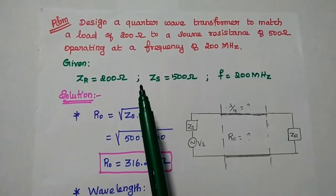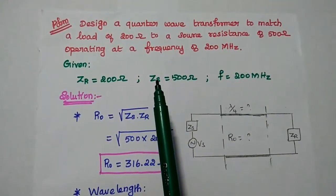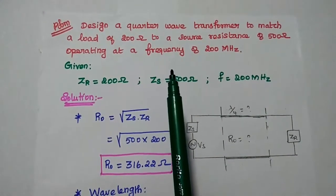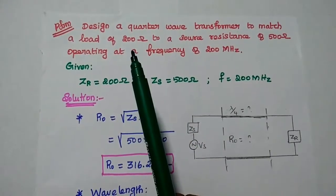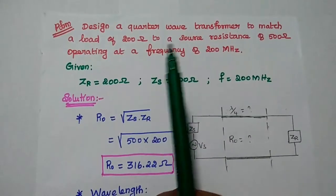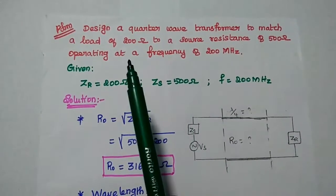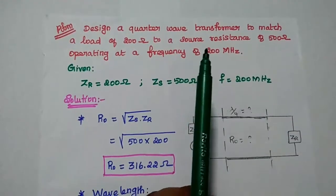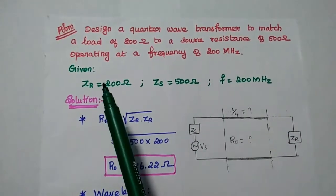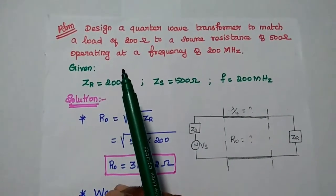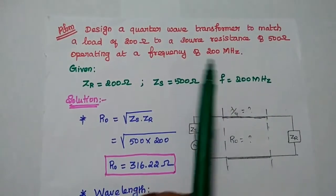Dear students, now we are going to solve important problems in quarter wave transformer. The first problem: design a quarter wave transformer to match a load of 200 ohm to a source resistance of 500 ohm operating at a frequency of 200 MHz.